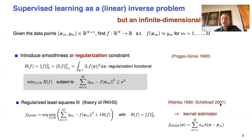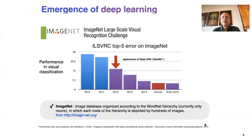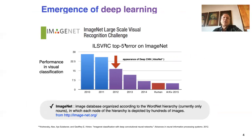This is the foundation of classical learning — support vector machines, regression, ridge regression — all methods based on kernels. But what has happened in machine learning, as you all know, is the deep learning revolution and the emergence of deep neural networks.